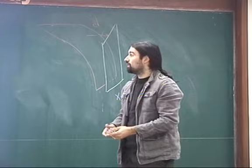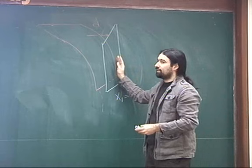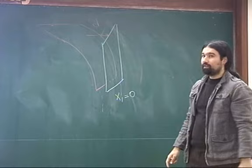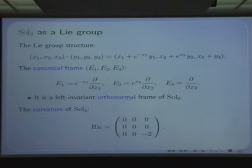Sol₃ also has a Lie group structure. The group operation on ℝ³ is given by (x₁,x₂,x₃)·(y₁,y₂,y₃) = (x₁ + e^{x₃}y₁, x₂ + e^{-x₃}y₂, x₃ + y₃), and the Riemannian metric of Sol₃ is left-invariant for this Lie group structure.